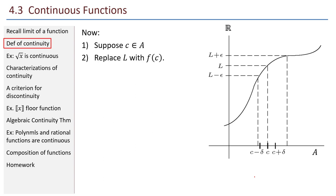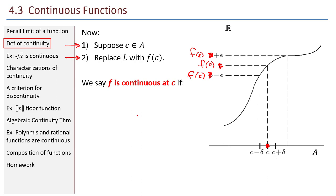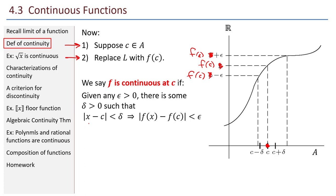Now let's turn our attention to continuity. I'm going to change two things. First, I'm going to suppose that C really is in my domain — I can plug C into the function and get a value out. So I will replace L with F of C. F is continuous at C if given any epsilon greater than zero there is some delta such that absolute value of X minus C less than delta implies absolute value of F of X minus F of C is less than epsilon. I don't require absolute X minus C to be greater than zero, and I've replaced L with F of C. Topologically, X being within delta of C implies F of X being within epsilon of F of C.